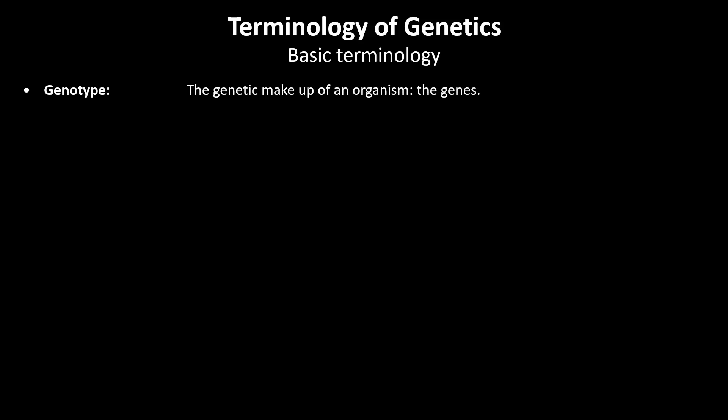Let's discuss some basic terminology. The genetic makeup of an organism — the genes — is called the genotype. The physical and physiological characteristics of an organism which we can observe with our eyes are called the phenotype. The phenotype is influenced by genetic makeup and environmental factors.